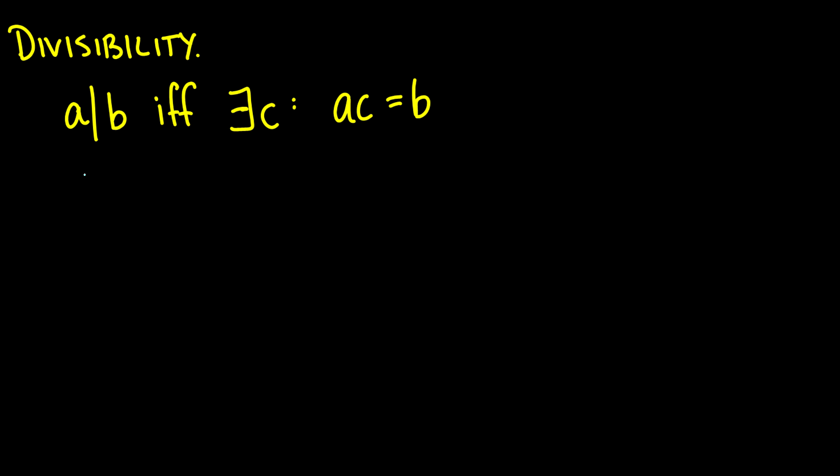So here's the definition of divisibility. We say A divides B, and this line here is the division sign, if and only if there is some number C such that A times that number C is equal to B, where A and B can be any integer, but C has to be a positive integer.